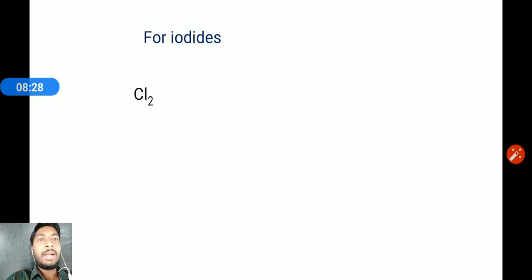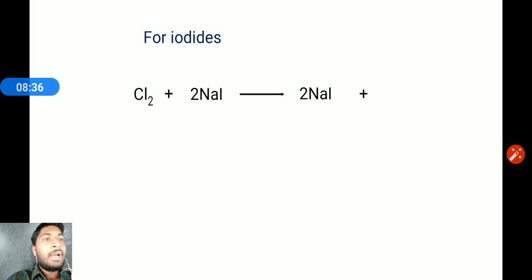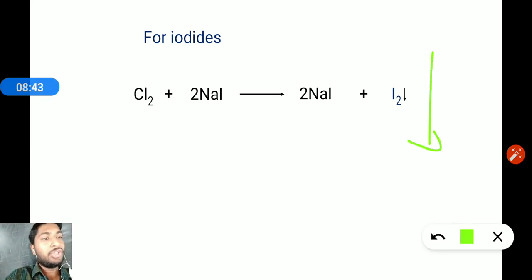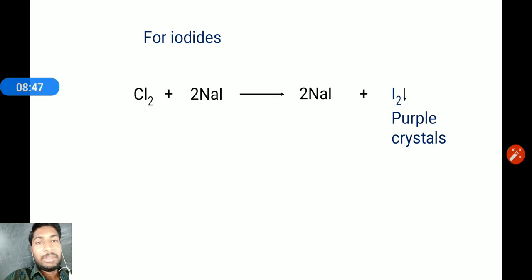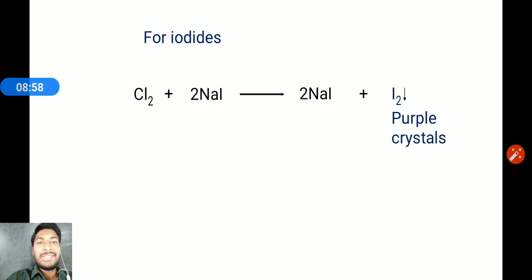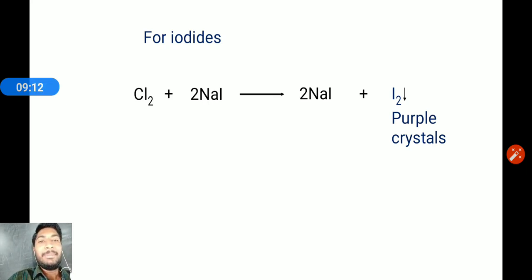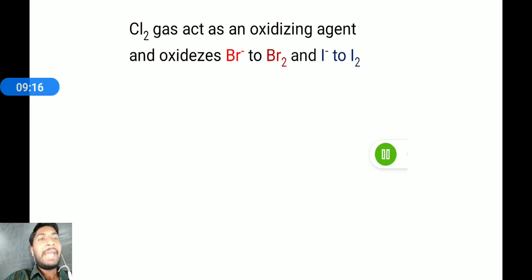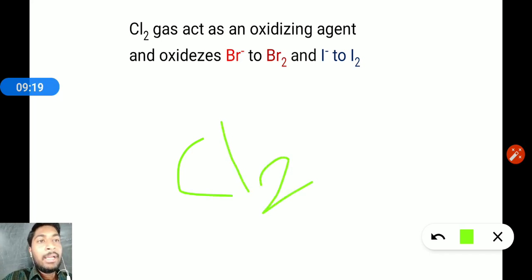For iodides: chlorine gas is passed through sodium iodide solution. Sodium iodide reacts and iodine crystals are formed. These iodine crystals have a purple color and appear directly in the solution. If the organic compound contains iodine and chlorine gas is passed, a purple color is observed confirming iodine is present.